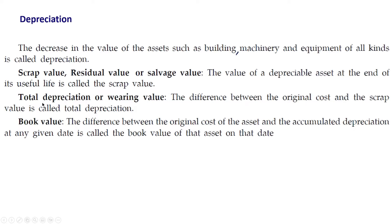Next, we have the book value of the asset. We can find the book value of the asset at any particular time by finding the difference between the original cost of the asset and the accumulated depreciation at any given date. That will be the book value of that asset on that date.